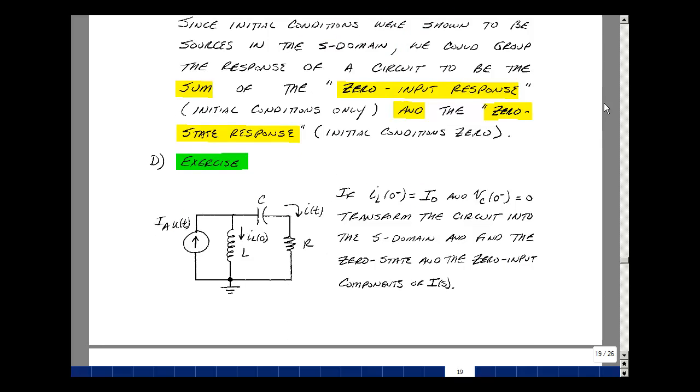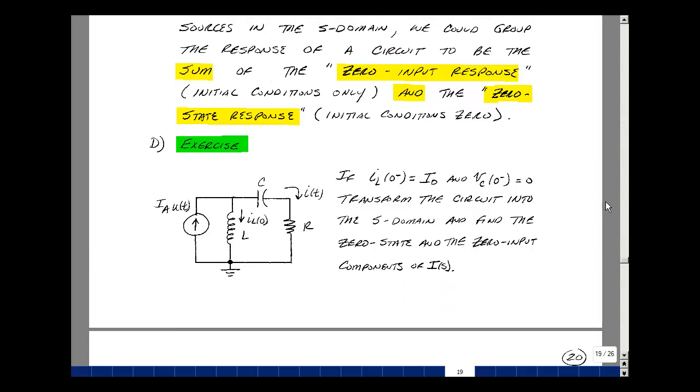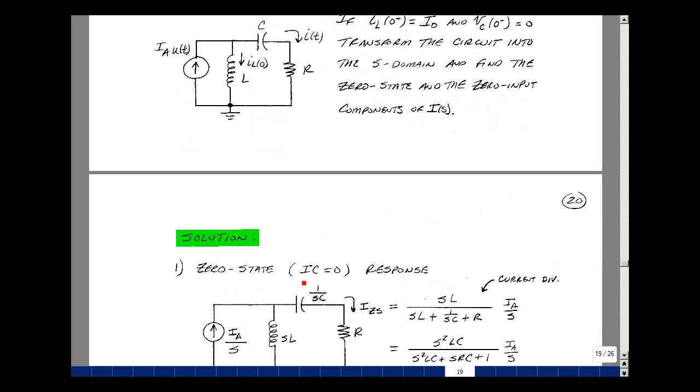Let's do an example. Suppose I have this L in parallel with a C and an R, and have a current source i sub a times u of t. Suppose that the initial condition on the inductor is i0 and there's a DC current, and the initial voltage across the capacitor is zero. Let's transform the circuit into the S domain, and let's find the zero state and the zero input responses of i of s.